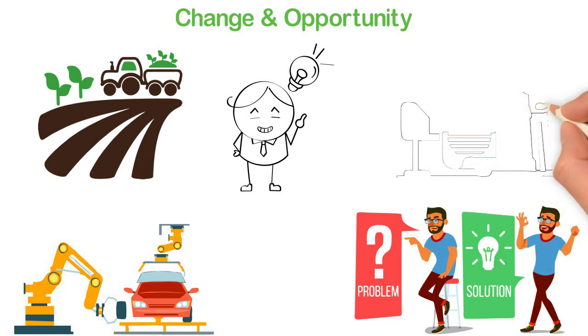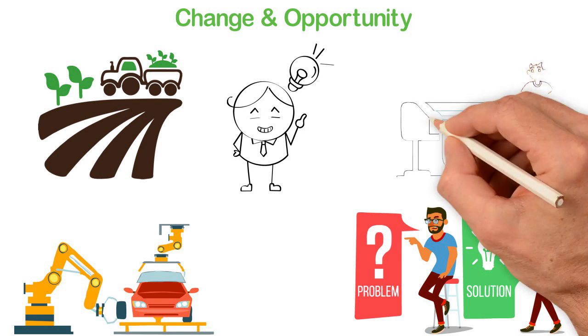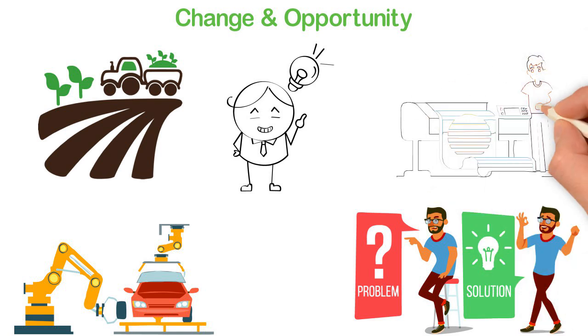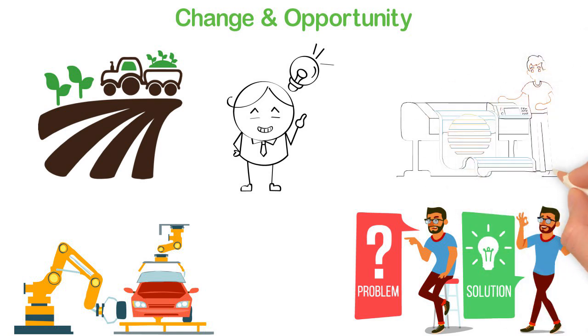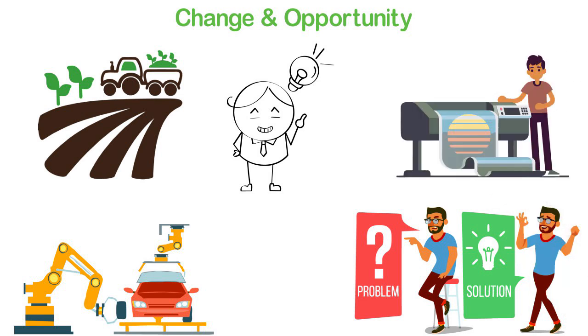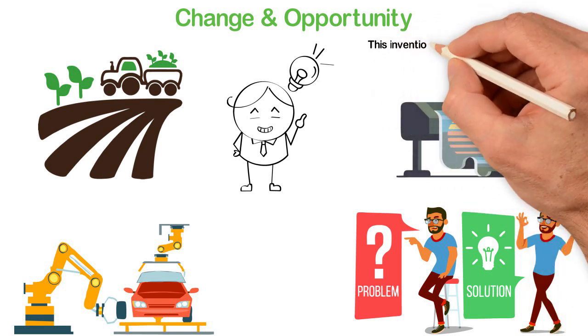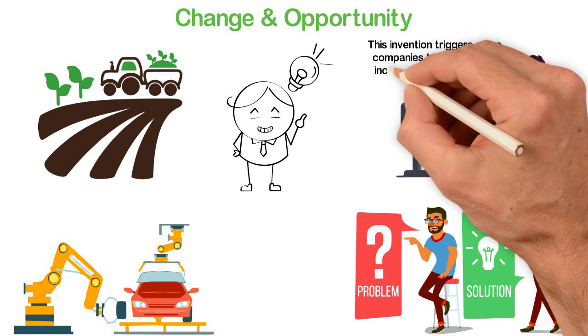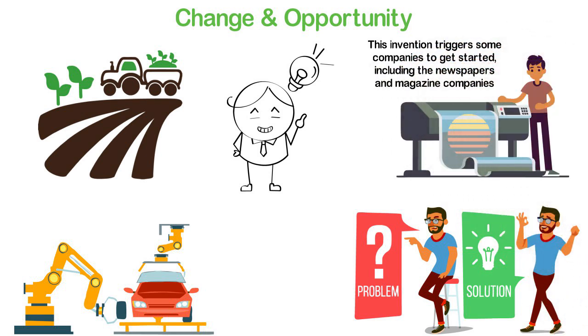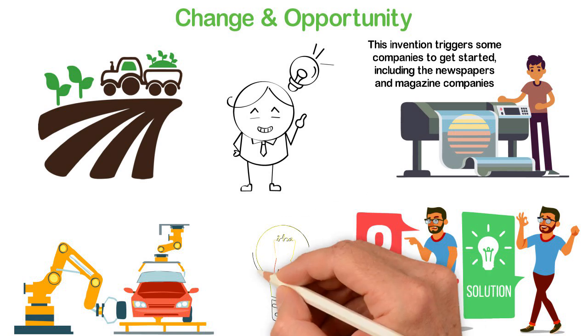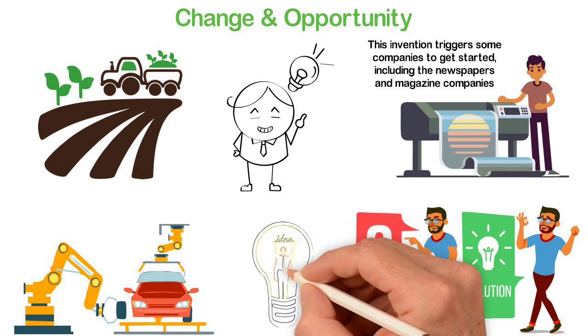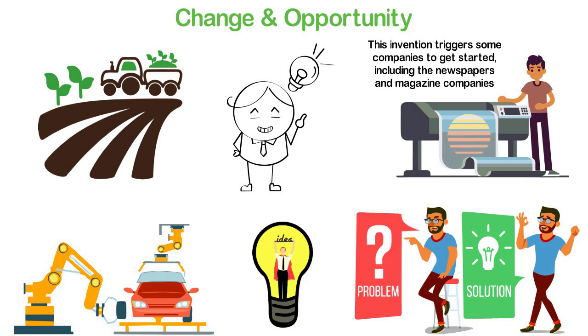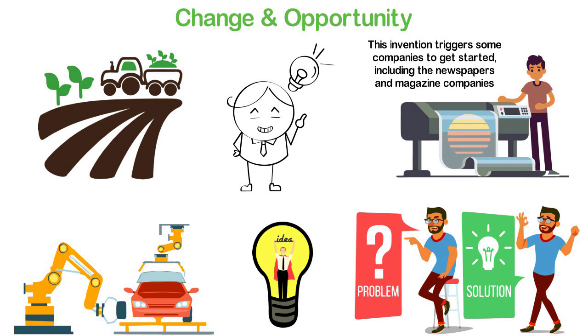This is another example. The printing press was invented in 1440. This was a massive change because for the first time in the world, we started mass-producing books, daily news and others. Several companies got started including newspapers and magazine companies. Some smart individuals became rich by positioning themselves to take the chance of the opportunity while everyone else complained and made excuses.